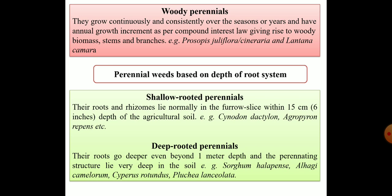Perennial weeds have also been classified based on the depth of their root system into two categories: shallow rooted perennials and deep rooted perennials. In shallow rooted perennials, roots and rhizomes lie within the furrow slice, normally within 15 centimeters or six inches depth of agricultural soil; examples include Cynodon dactylon and Agropyron repens. In deep rooted perennials, roots go deeper, even beyond one meter depth, with perennating structures lying very deep in the soil; examples include Sorghum halepense, Alhagi camelorum, Cyperus rotundus, and Pluchea lanceolata.